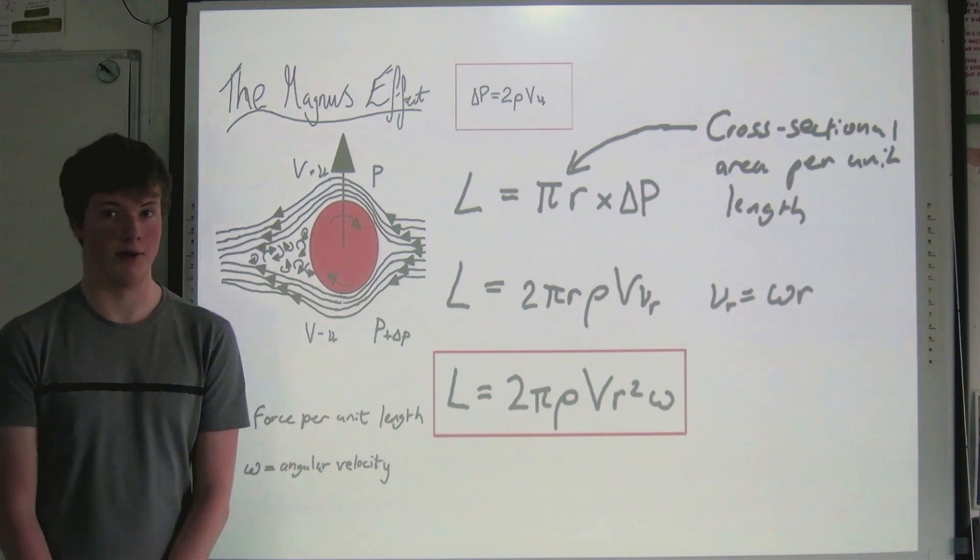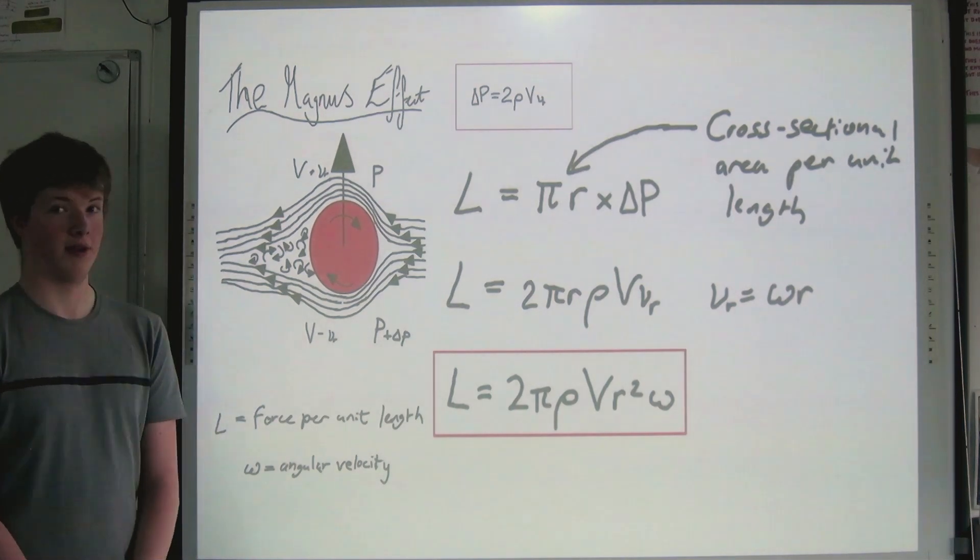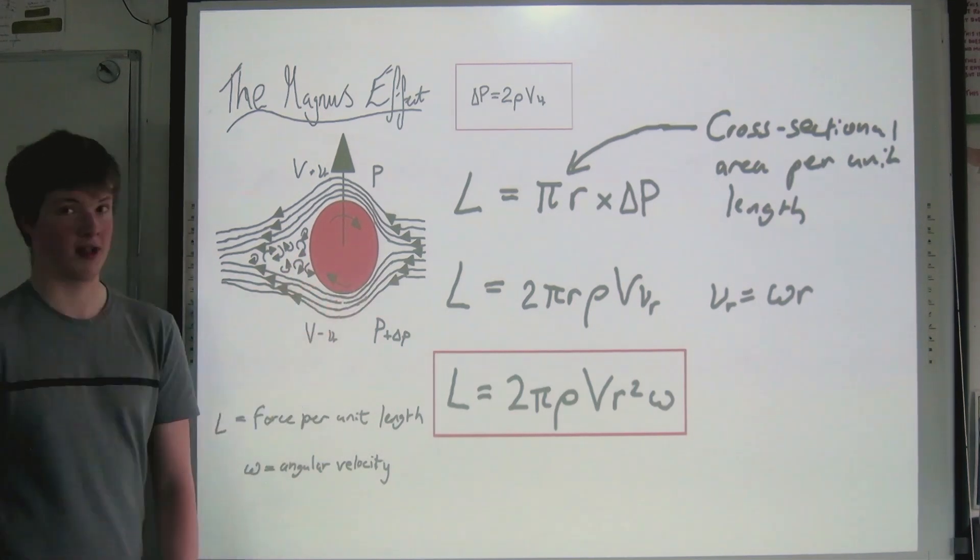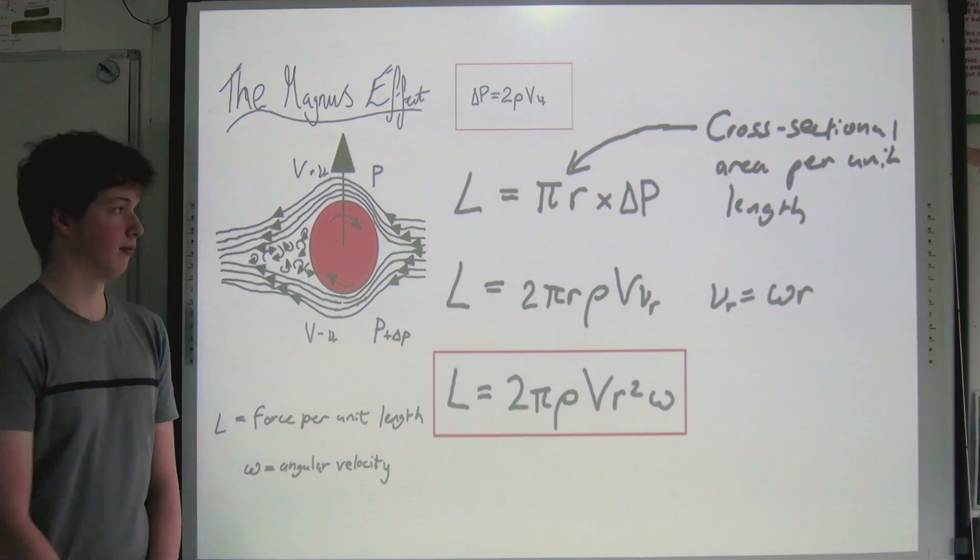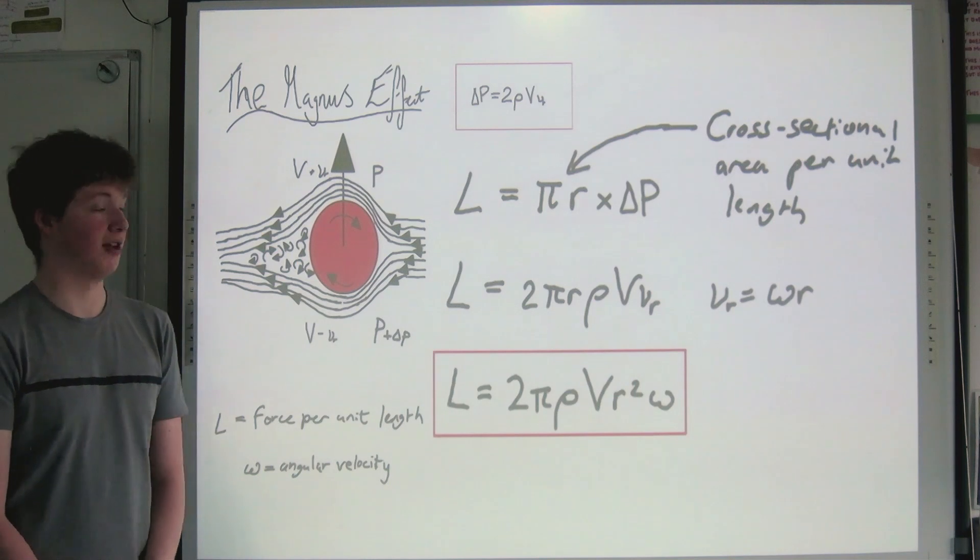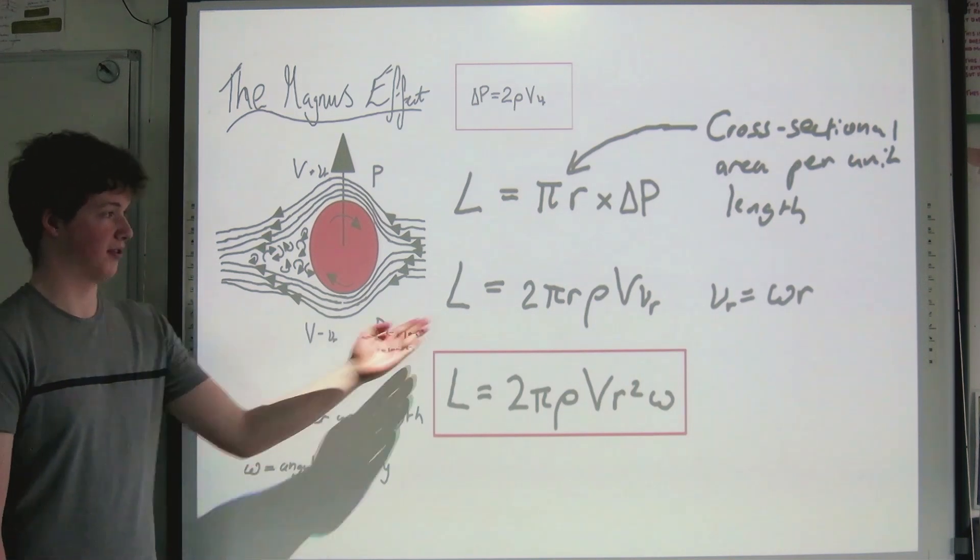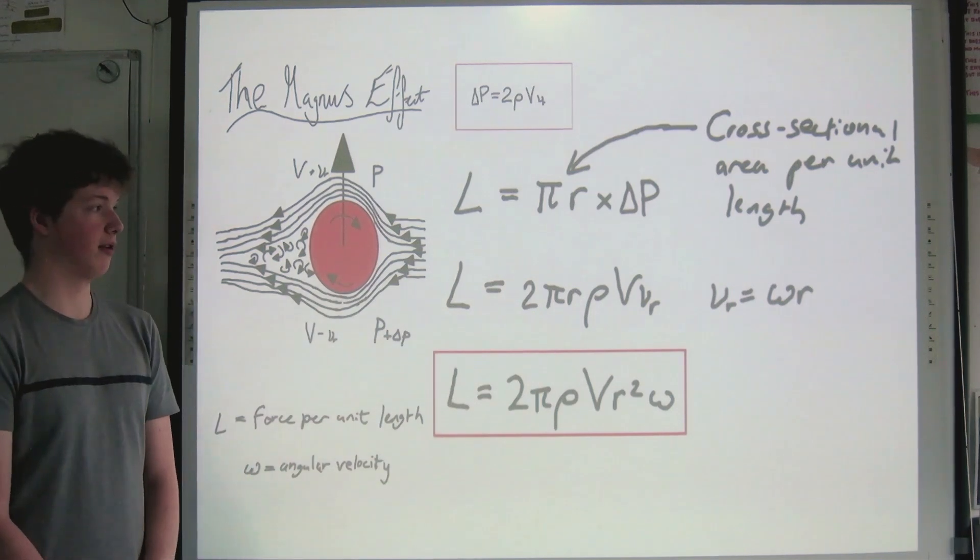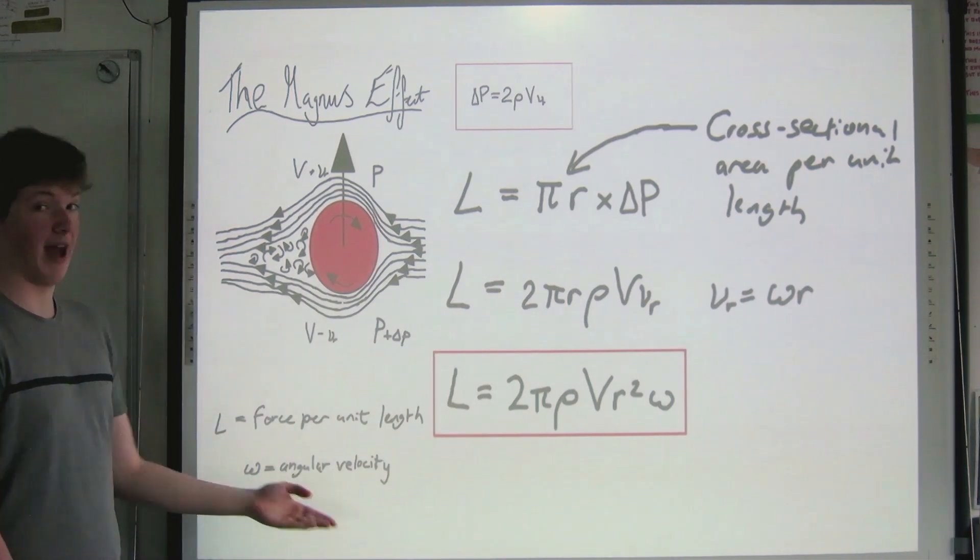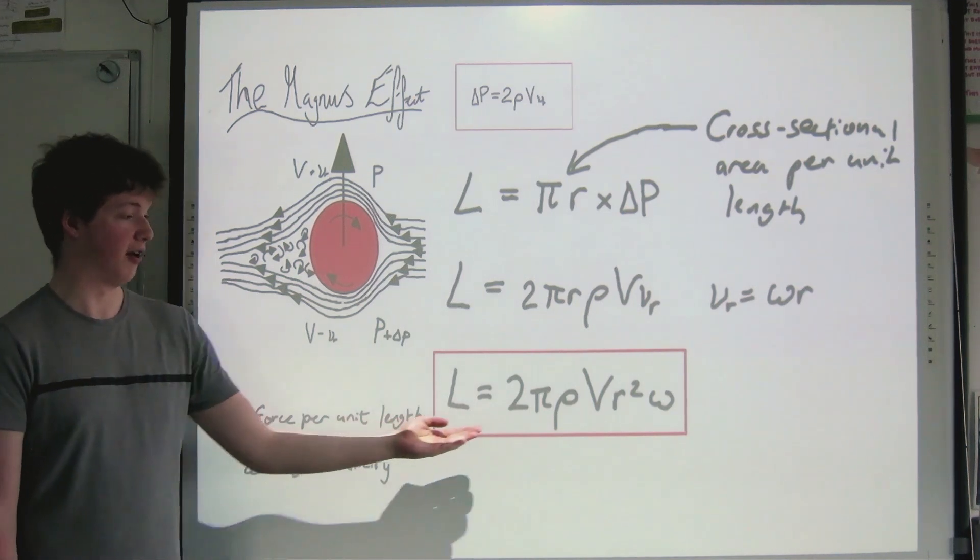For the final force exerted per unit length due to the pressure delta p, we first need to find the cross-sectional area of the unit length. This is given by πr, half the circumference of the circle. Multiplying this and substituting the values of delta p, we can obtain the expression for L, the force per unit length. vr can be further simplified to ωr, omega being the angular velocity and r being the radius of the circle. This gives us our final result.